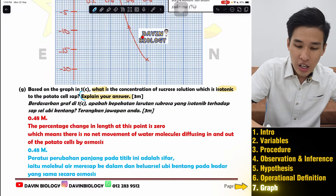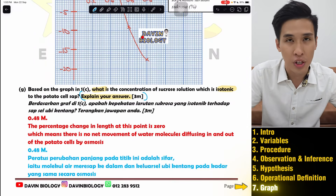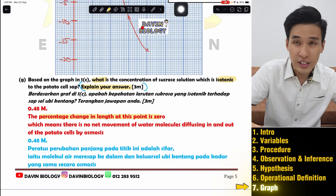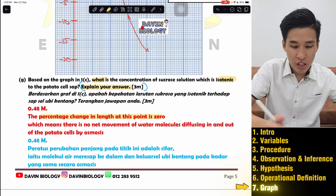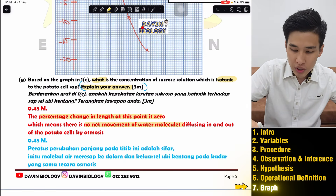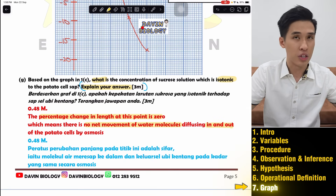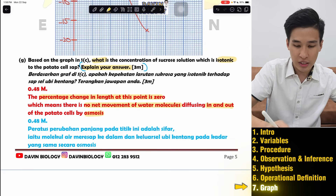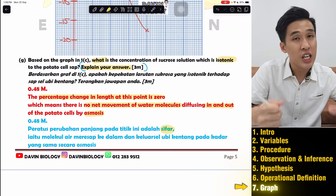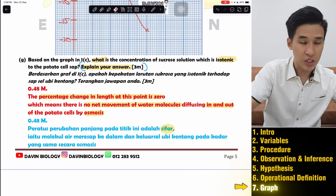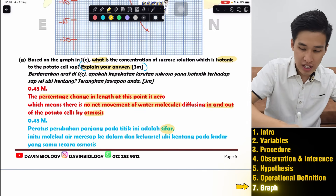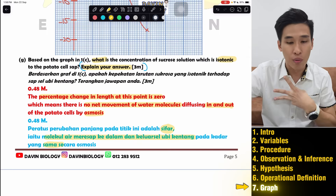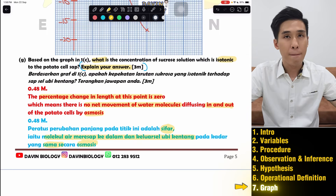To explain your isotonic concentration: the percentage change in mass at that point is zero, meaning there is no net movement of water molecules diffusing in and out of the potato cells by osmosis. In BM: peratus perubahan panjang pada titik ini adalah sifar, bermakna molekul air yang meresap ke dalam dan keluar sel ubi kentang adalah sama — secara osmosis. Don't forget to include 'osmosis'.